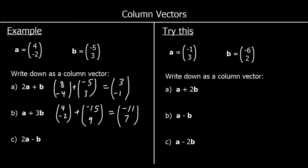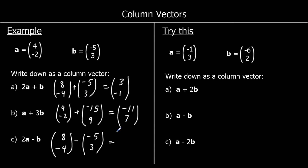And 2A minus B. So 2A — doing A twice — gives 8, negative 4. And we're taking away B, which is negative 5, 3. For the x: 8 minus negative 5. When we take away a negative, we go up. So 8 plus 5 is 13. And negative 4 take away 3 is negative 7. So if we go 2A and then backwards along a B, we'd get 13 to the right and 7 down.